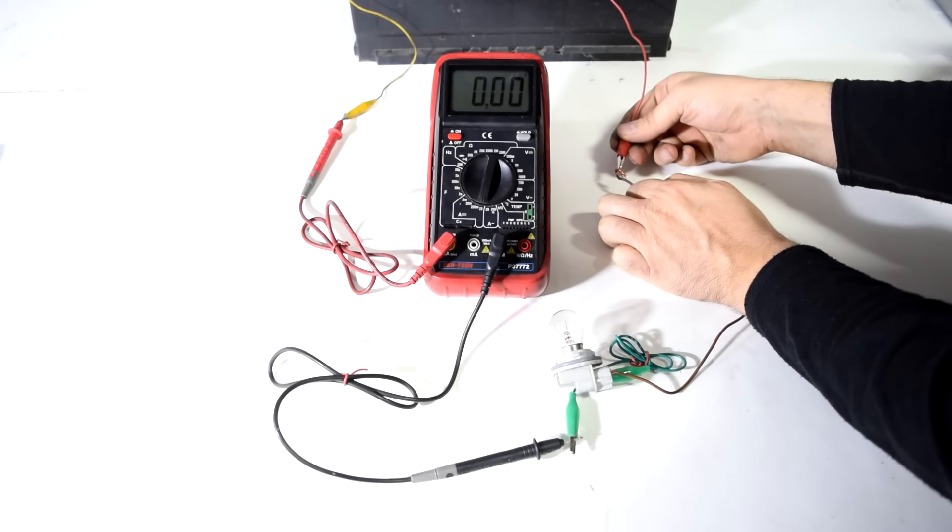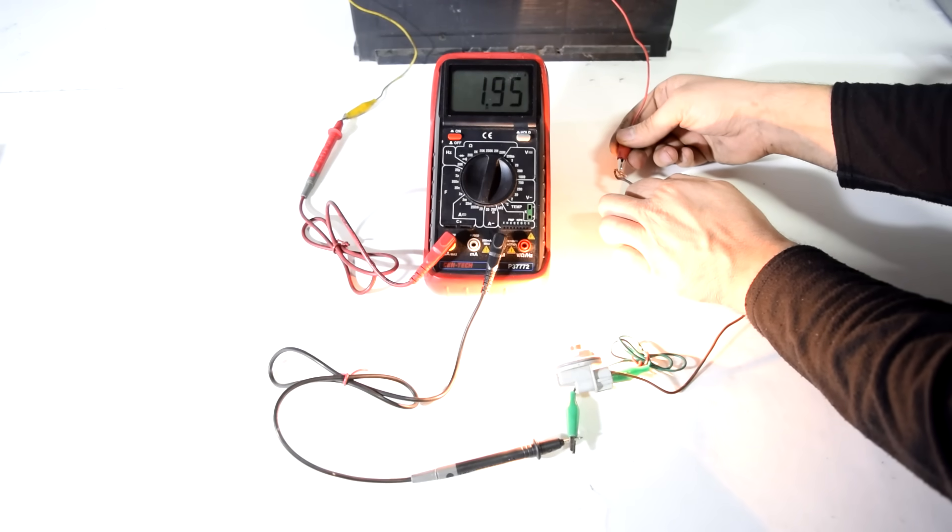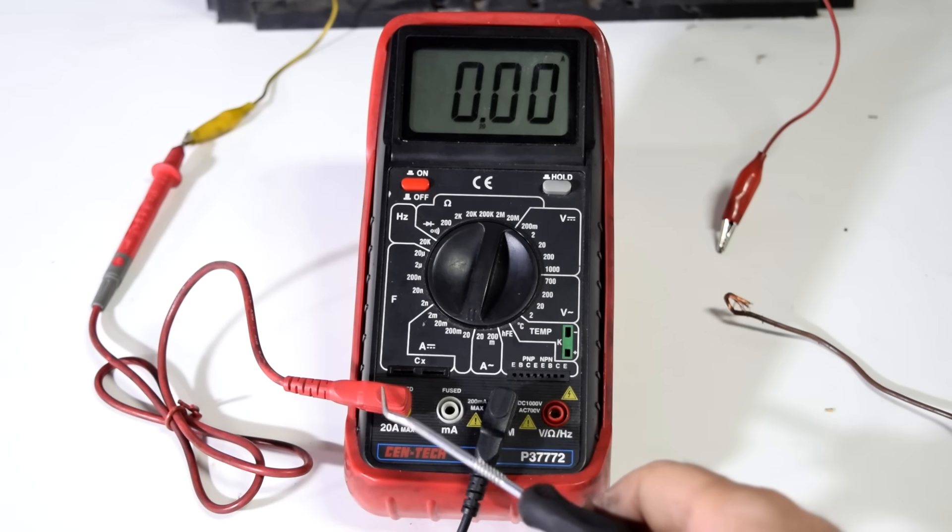And next when we complete the circuit by connecting our ground side our light bulb turns on and we get our reading and as you can see we got 1.95 amps. So it was a great move putting our red test lead on this higher setting to measure 20 amps otherwise we would have blown a fuse here.